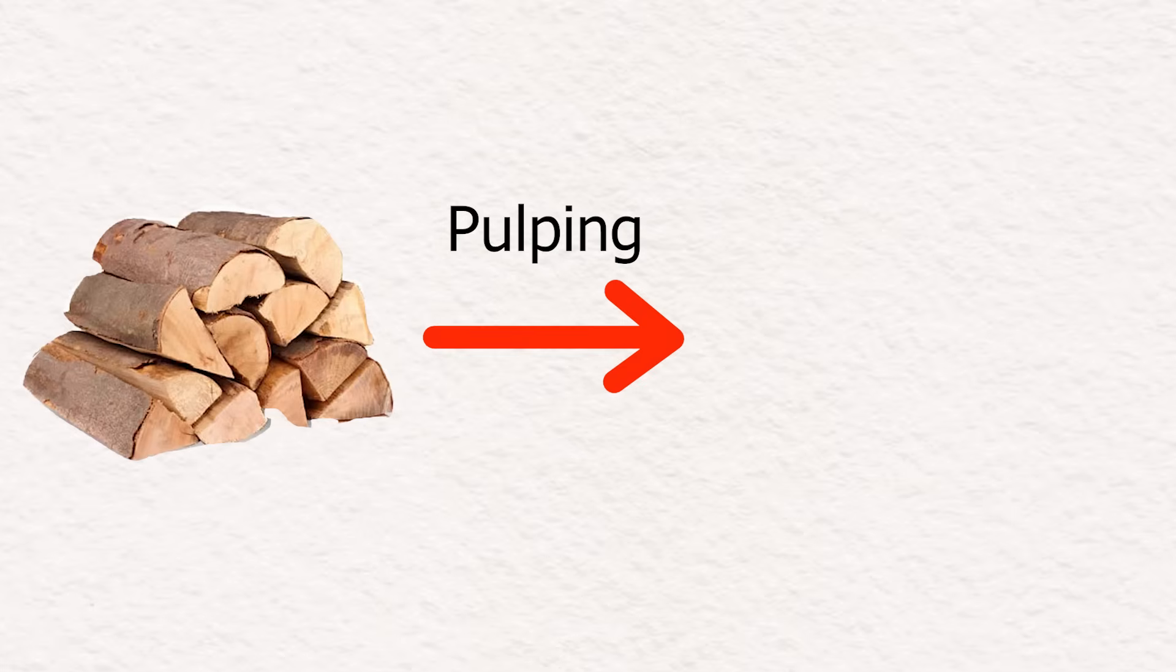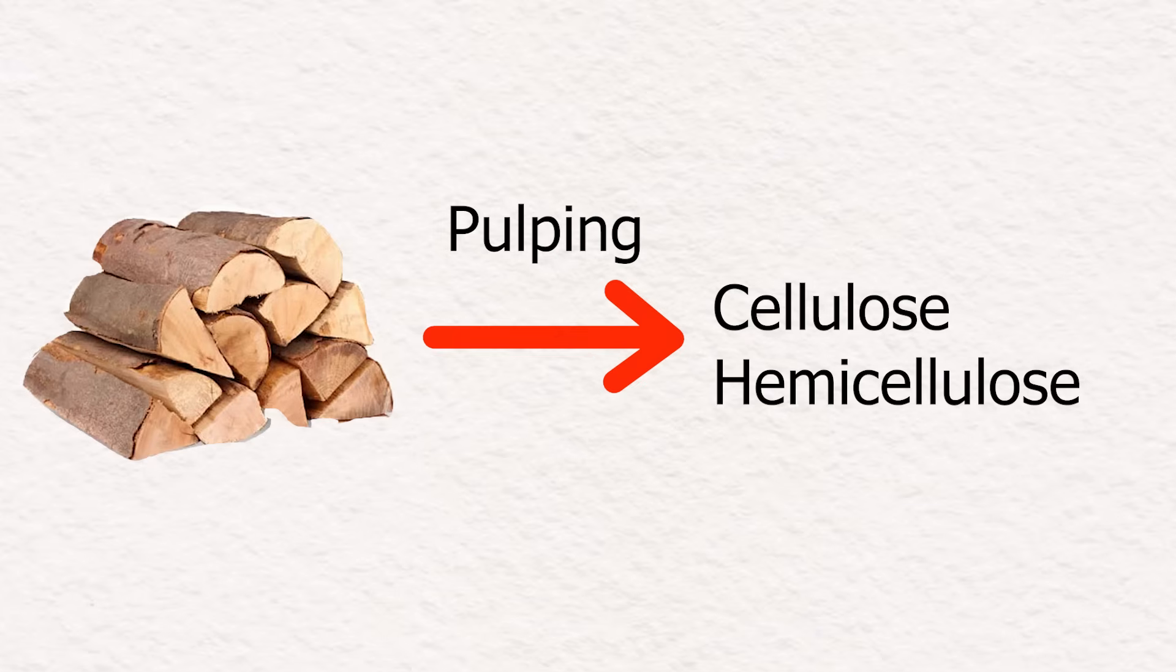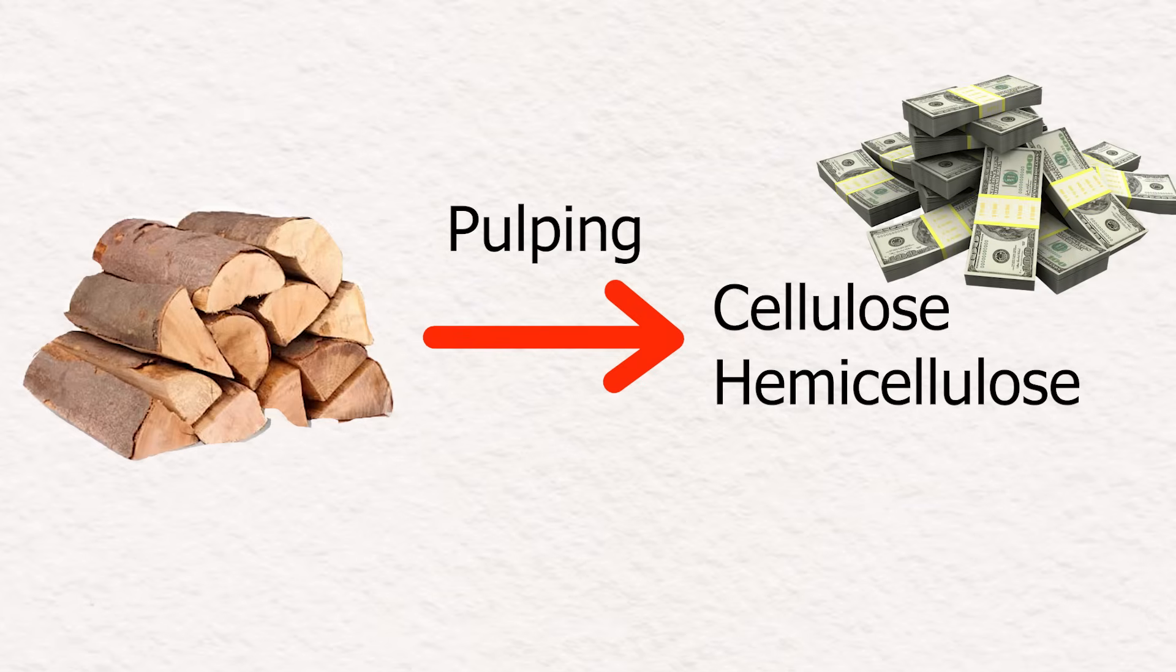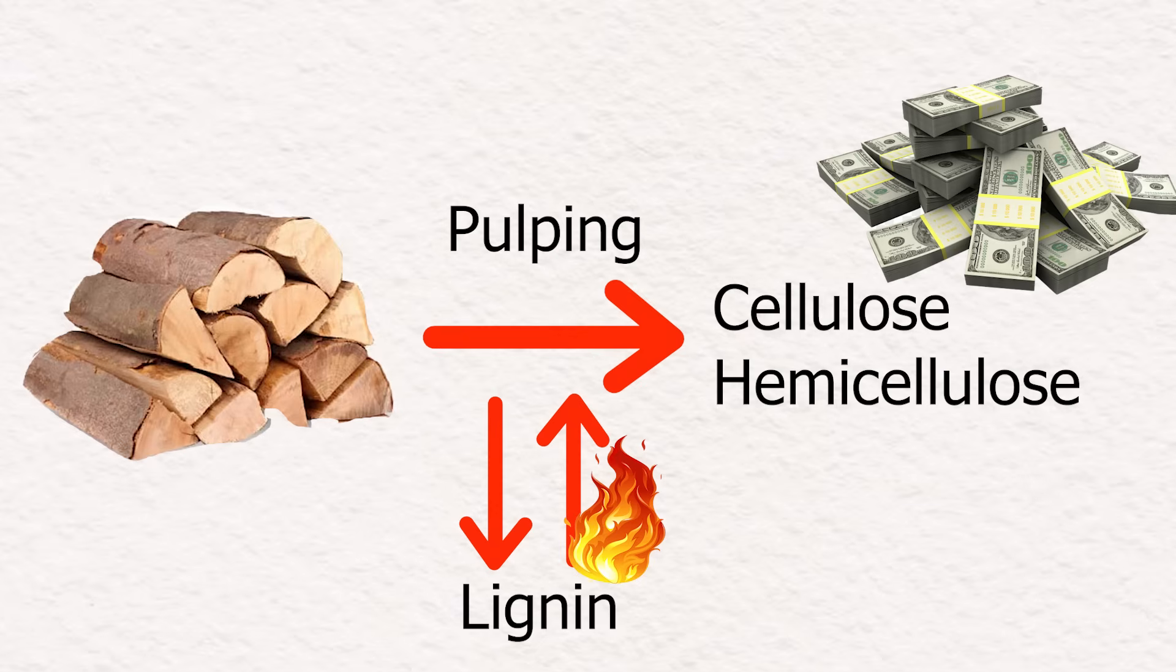Pulping processes are almost exclusively used to extract the cellulose and hemicellulose, because these are seen as valuable, since they can be used to make paper and other related products. Meanwhile lignin is not used for many applications and is usually just burned in the same process for energy.